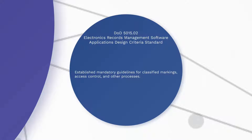Let's examine DOD 5015.02, Electronics Records Management Software Applications Design Criteria Standard. This document established mandatory guidelines for classified markings, access control, and other processes. It identifies non-mandatory features deemed desirable for records management applications (RMA) software. It manages Freedom of Information Act and Privacy Act records, and requires the RMA software to adhere to DOD net-centric information sharing principles.